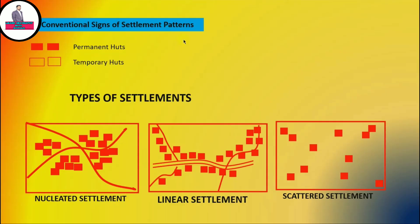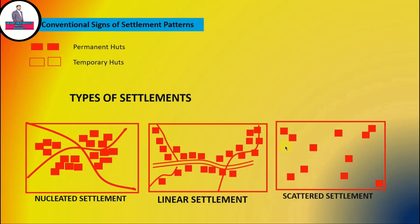Now, conventional signs of settlement patterns. You would see the red boxes: a complete red box will be termed as permanent huts, and red boxes which are just an outline are known as temporary huts. Altogether, settlements are known as nucleated because they are very close to each other, linear because they are drawn across the road, and scattered because they are far away from each other.